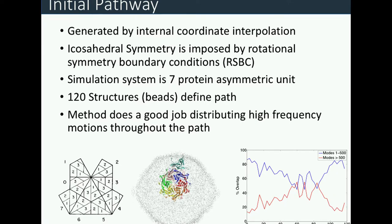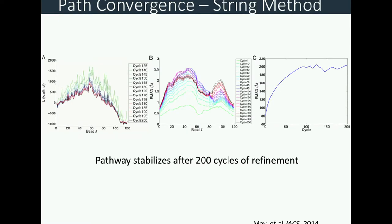A problem with steered molecular dynamics is the 'low-frequency first' problem: the system moves along softer degrees of freedom initially, leaving high-frequency motion needed at the end, creating barriers late in the pathway. Our interpolation method provides a more even distribution, as shown by the low-frequency and high-frequency normal mode projections along the pathway. We then refine the pathway to a low-energy pathway using the string method, which relieves forces acting orthogonal to the path.